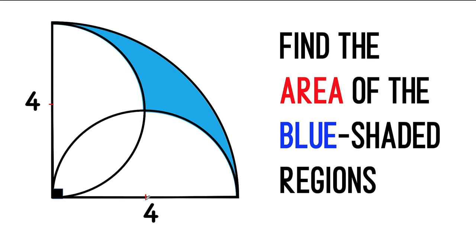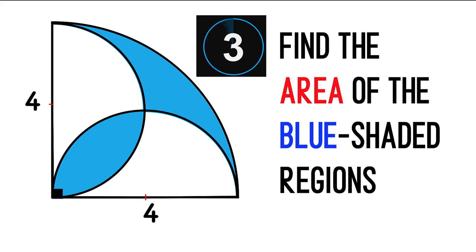Then we shade this region and this other region, and we would like to find the combined area of these two blue shaded regions. You can pause the video and see if you can solve this elegant geometry problem.